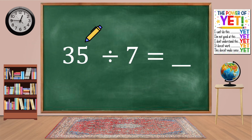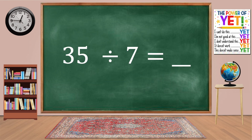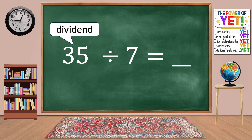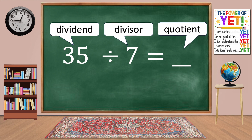35 divided by seven equals blank. First, let's name the numbers in the division sentence. The number being divided is the dividend. The number that tells us what the dividend is divided by is called the divisor, and the answer is the quotient.